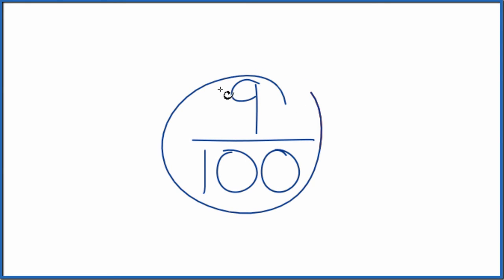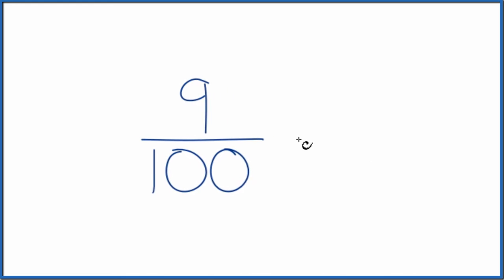Let's write the fraction 9 one-hundredths as a decimal. There are a few ways we could do this. We could just use our calculator, divide 9 by 100, or divide longhand.